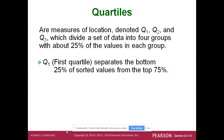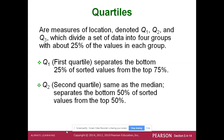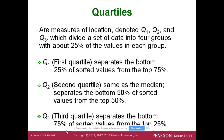A quartile is just a special percentile. All the work is the same, but quartiles are at quarter-way points. The first quartile is at the 25th percentile, the second quartile is at the 50th percentile, and the third quartile is at the 75th percentile. So quartiles are just special percentiles at the 25, 50, and 75 marks. They divide the data set into fourths — that's what quartiles are. Very simple concept.